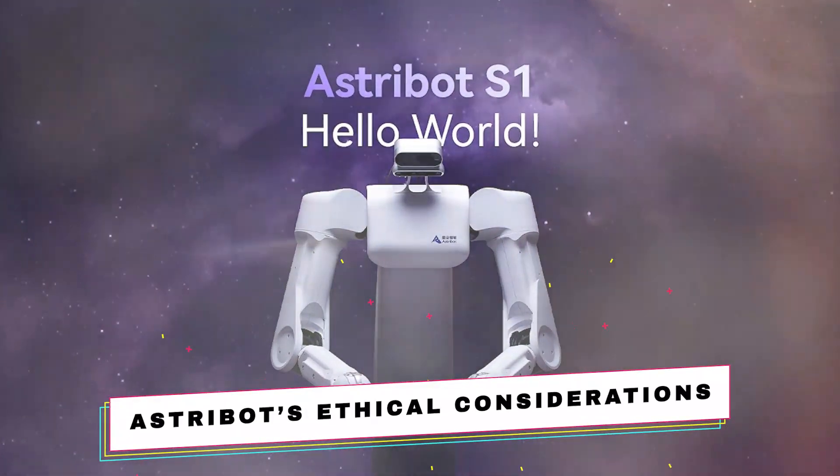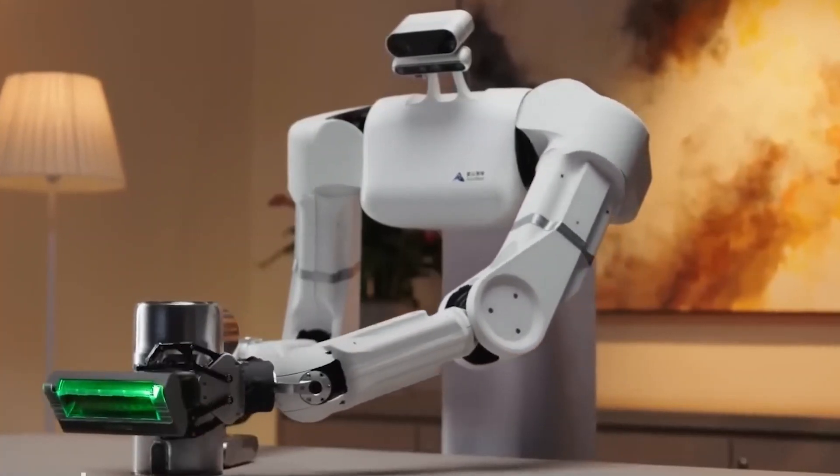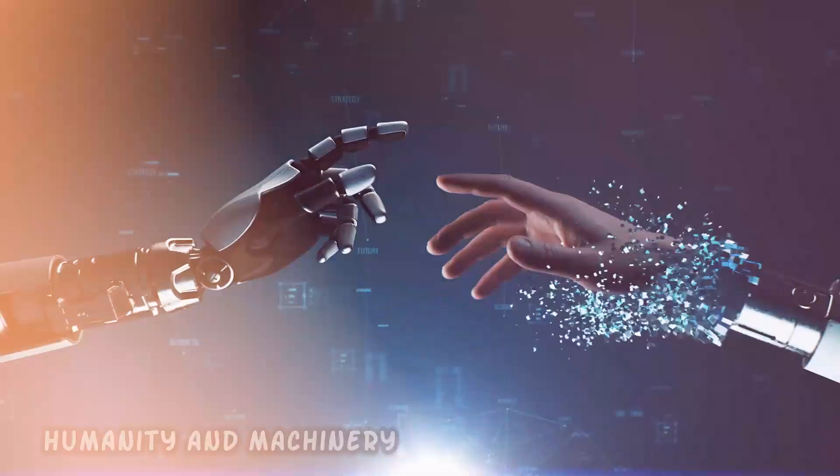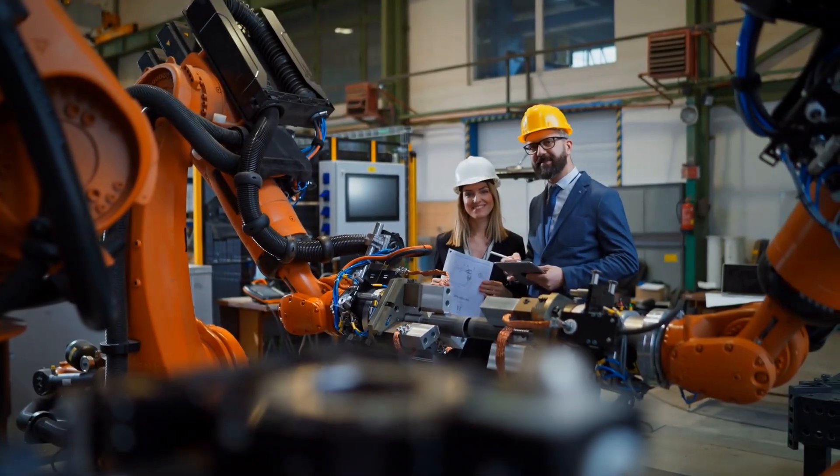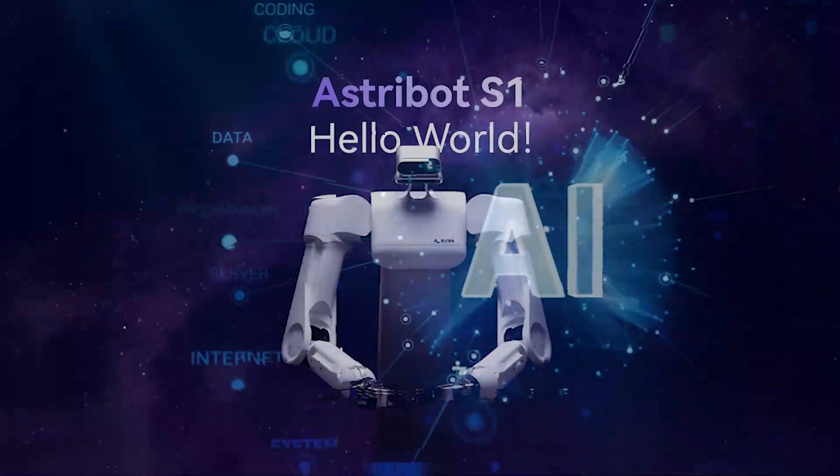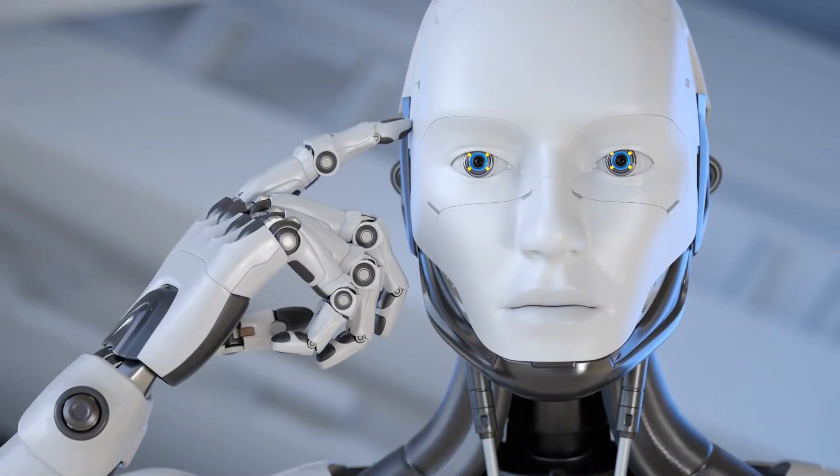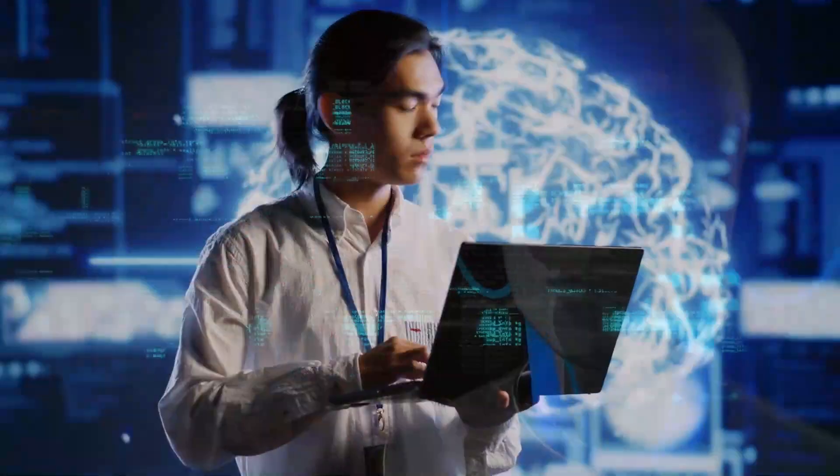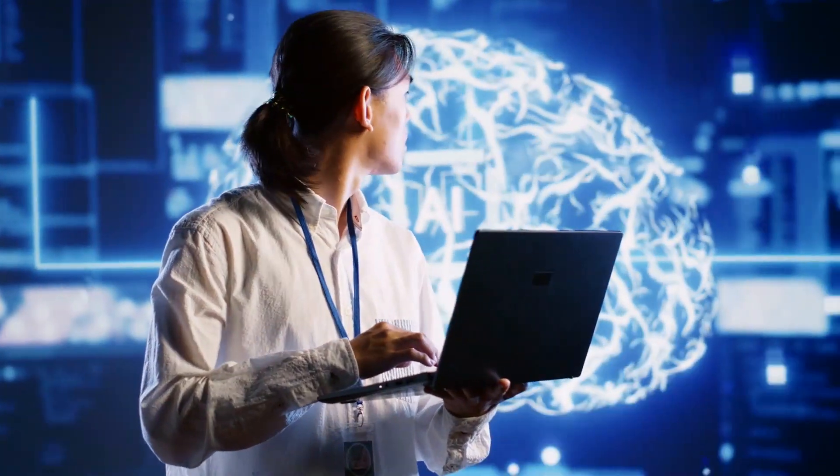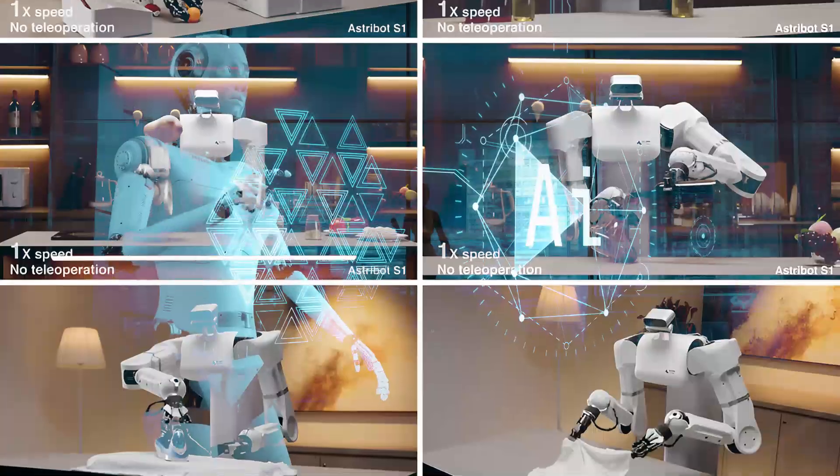Astrobot's ethical considerations. Astrobot's emergence blurs the boundaries between humanity and machinery, triggering profound ethical inquiries. How do we navigate the responsible development of artificial intelligence (AI)? Can we ensure that Astrobot's decisions consistently reflect human values? These pivotal discussions shape the trajectory of AI ethics and governance, guiding us towards a future where technology harmonizes with human well-being.